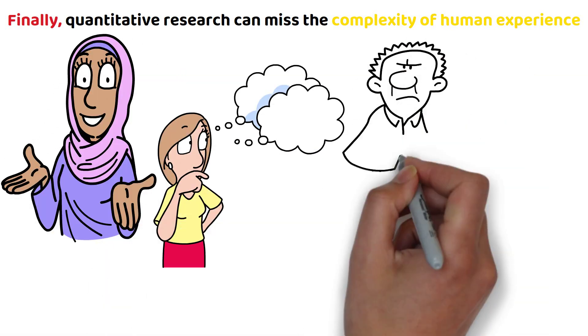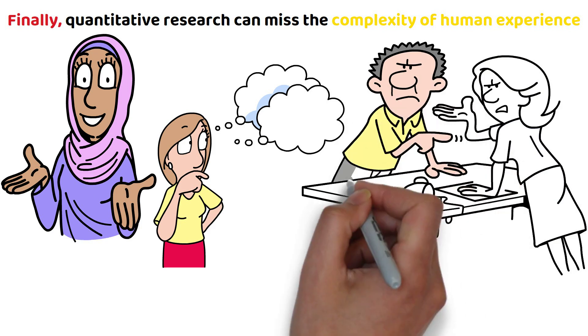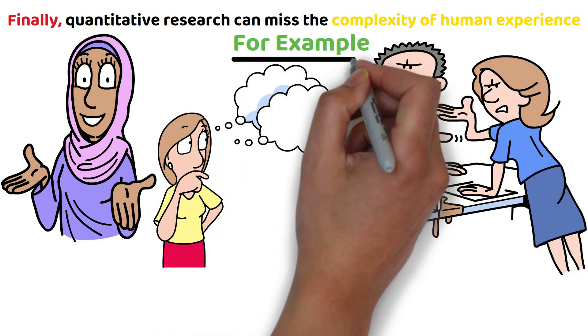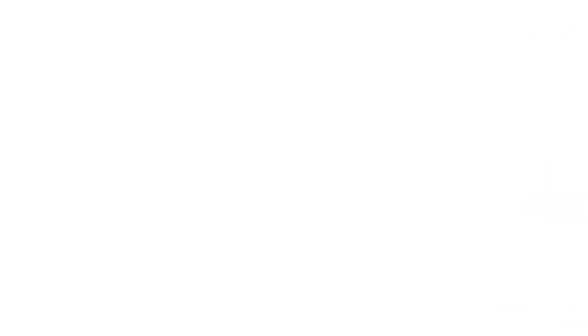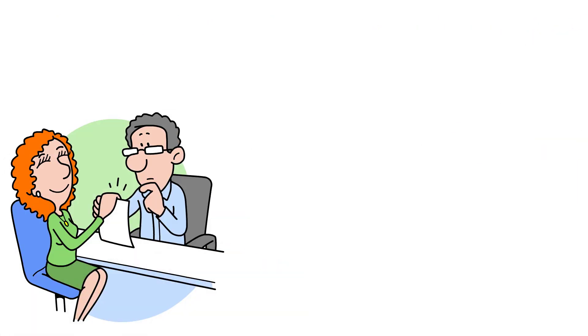Finally, quantitative research can miss the complexity of human experience. Reducing people's feelings, thoughts or behaviours to numbers may oversimplify complex issues. For example, assigning a number to life satisfaction on a scale doesn't fully capture the range of emotions a person might experience, limiting the depth of understanding gained from the research.